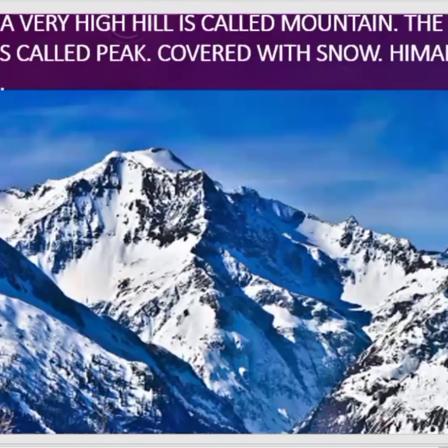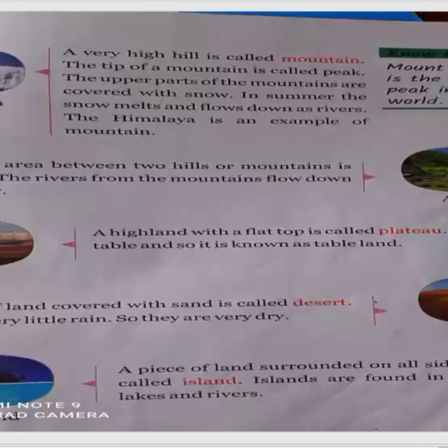Next is a desert. A vast area of land covered with sand is called a desert. Deserts receive very little rain, so they are very dry. The vast area of land covered with sand is called a desert.